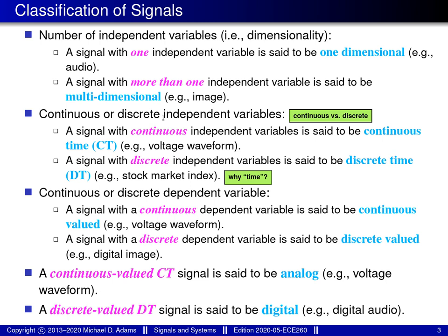We can also classify signals on the basis of whether their independent and dependent variables are continuous or discrete. A variable that's continuous in nature is one that can take on values over a continuum. A classic example would be a real-valued variable — it can take on the value zero, the value one, and importantly all values over a continuum between zero and one, such as 0.5, 0.7, 0.3, or any number in between.